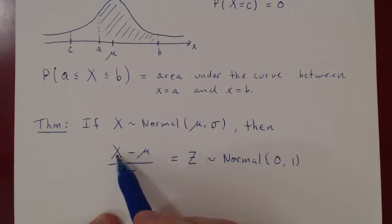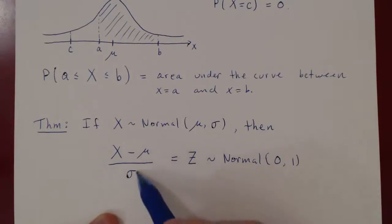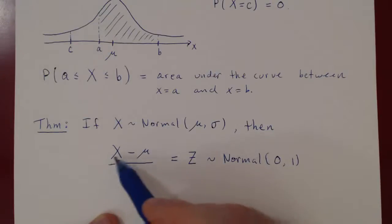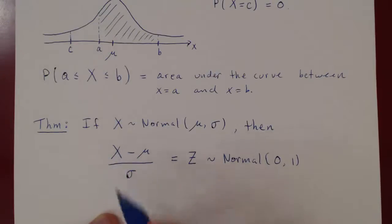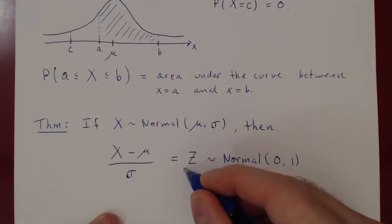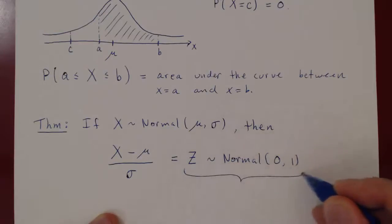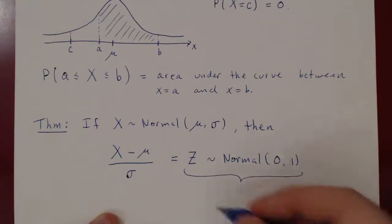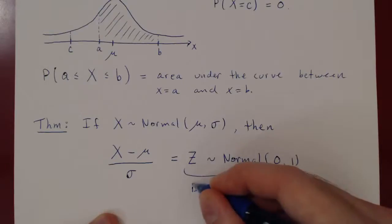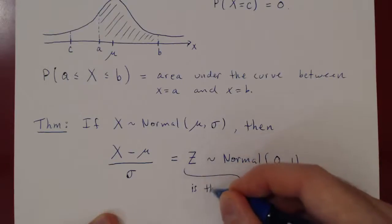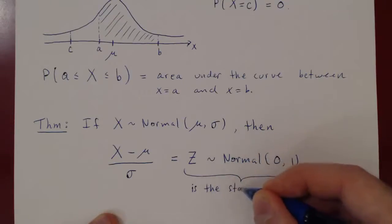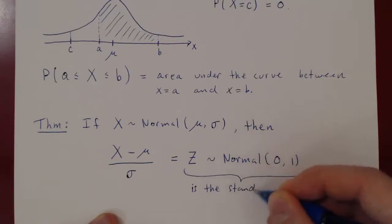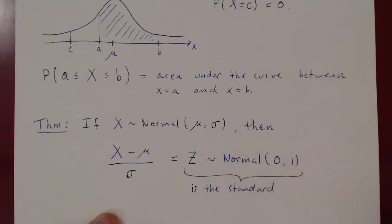The action of subtracting the mean and dividing by sigma, the deviation, is called standardizing the random variable x. The result z is the standard normal random variable, or the standard distribution.